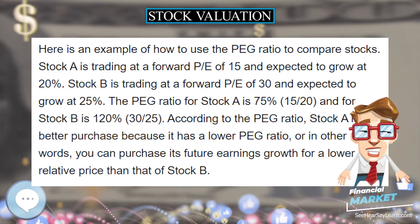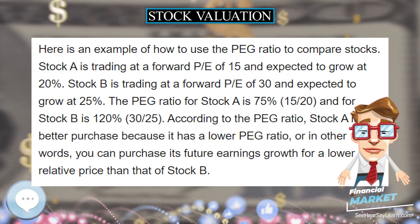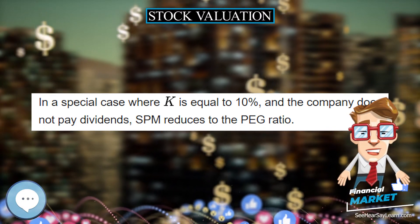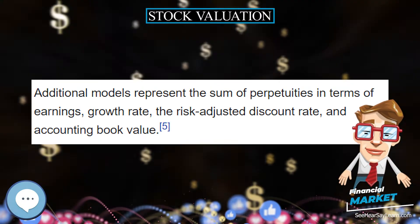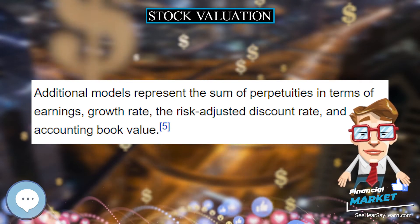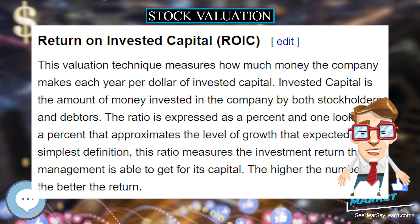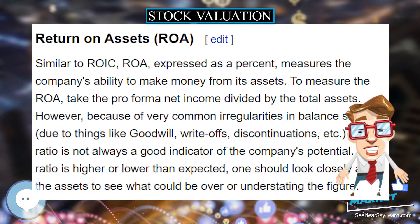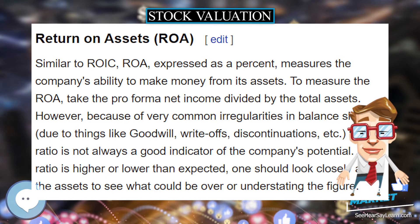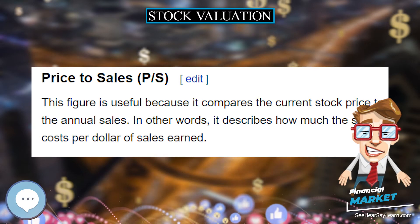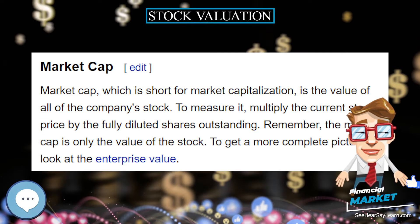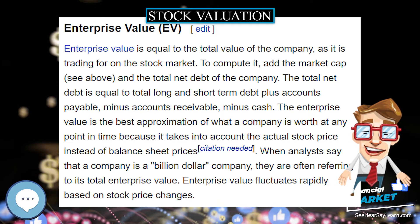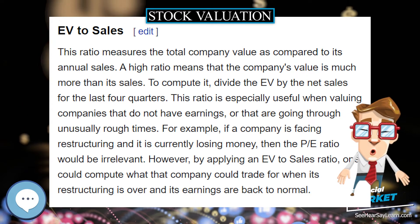Sum of Perpetuities Method. The PEG ratio is a special case in the Sum of Perpetuities Method (SPM) equation. A generalized version of the Walter model (1956), SPM considers the effects of dividends, earnings growth, as well as the risk profile of a firm on a stock's value. Derived from the compound interest formula using the present value of a perpetuity equation, SPM is an alternative to the Gordon growth model. In a special case where K equals 10% and the company does not pay dividends, SPM reduces to the PEG ratio. Additional models represent the sum of perpetuities in terms of earnings, growth rate, the risk adjusted discount rate, and accounting book value.